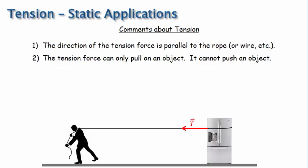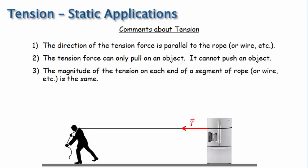And number three: the magnitude of the tension on each end of a segment of rope or wire, etc., is the same. So in this picture, if the right end of the rope pulls the refrigerator with a tension force of magnitude T, then the left end of the rope pulls on the person with tension force of the same magnitude T.